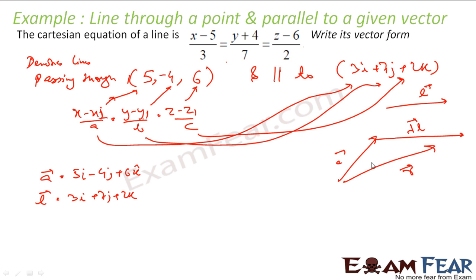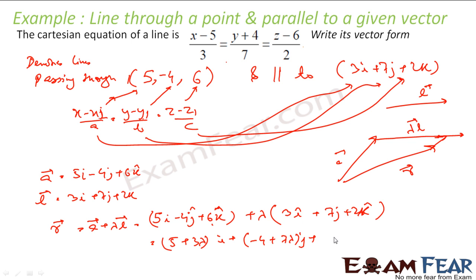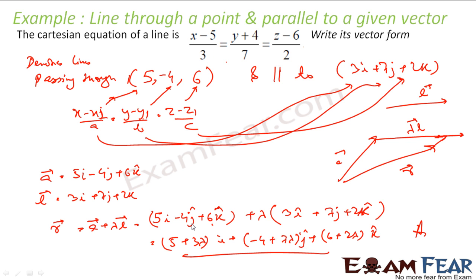Now, r vector can be any point on this line, so r vector = a vector + λ·l vector. A vector is 5i − 4j + 6k, and l vector is 3i + 7j + 2k. Expanding: r = (5 + 3λ)i + (−4 + 7λ)j + (6 + 2λ)k. This is my equation of the same line in vector form — very easy, not a difficult thing. The Cartesian form was given and from this we found the vector form. Similarly, if the vector form is given, I can find the Cartesian form also.